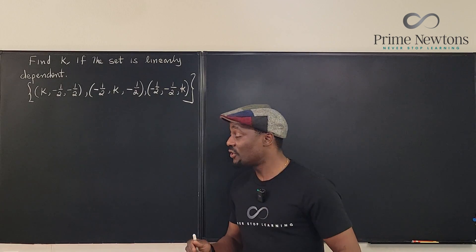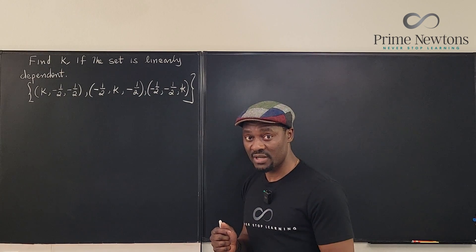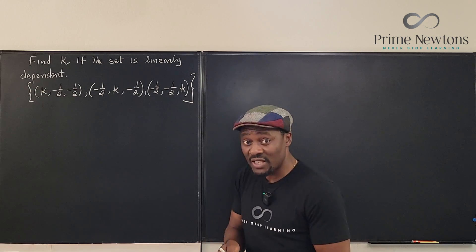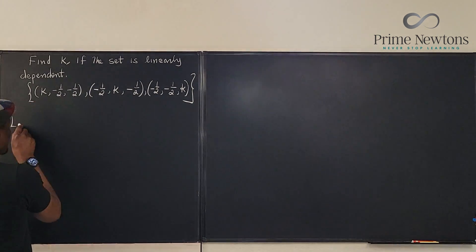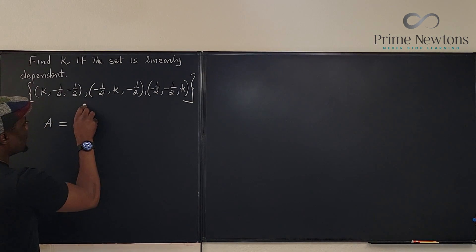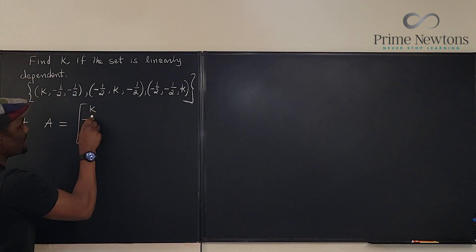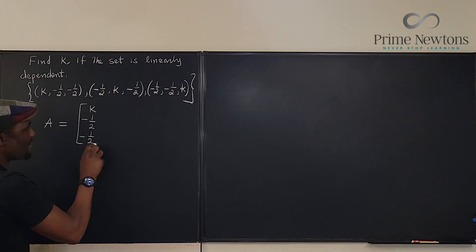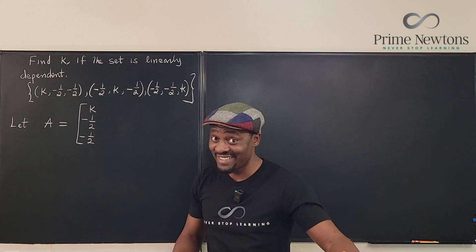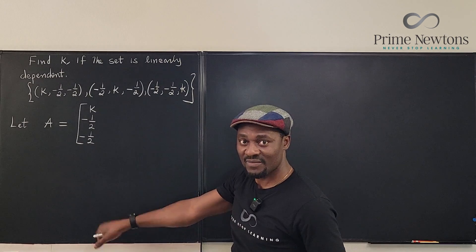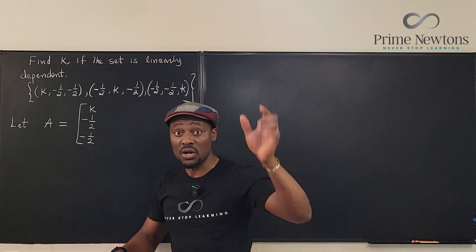Our strategy is to make a matrix out of these vectors and then find the determinant of the matrix. If it is zero, we're going to use that to get our k, which means we might be solving an equation. So let's make our matrix. Let A be equal to the matrix such that these are the column vectors: you have k, negative one half, and negative one half. Remember, you must put all vectors as columns unless otherwise stated — they are always column vectors.